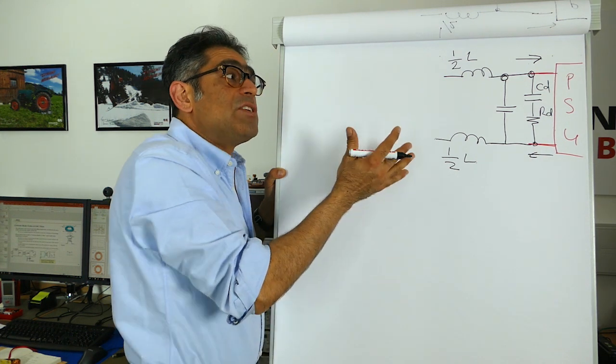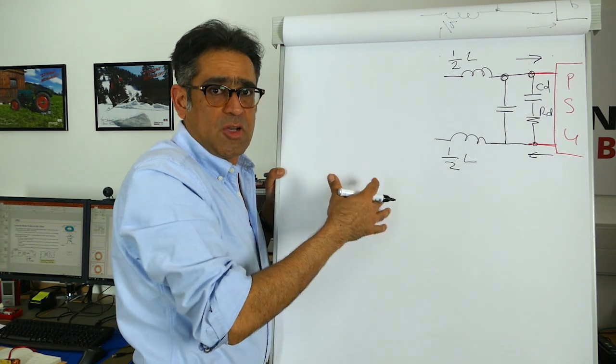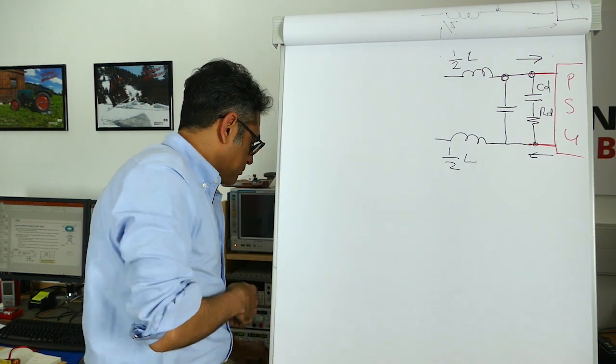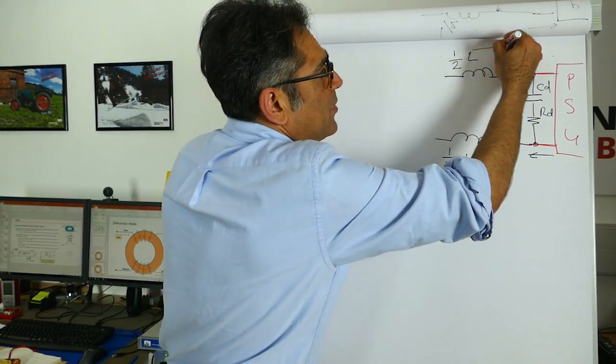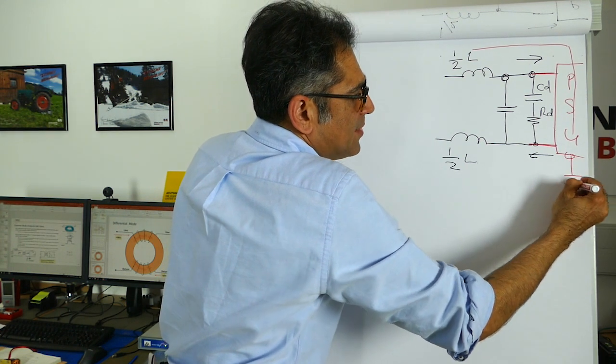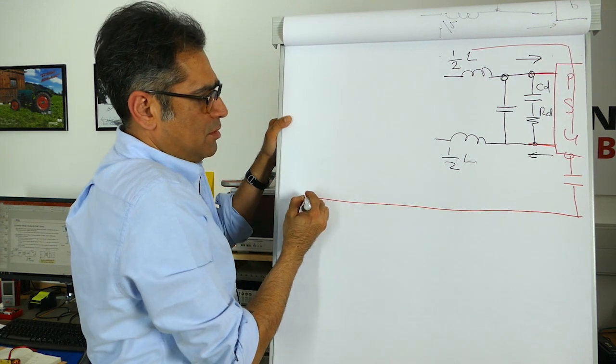Now as we discussed in the previous video we also have some common mode noise and common mode currents and we said that the common mode currents will flow this way and then return through parasitic capacitances to the chassis